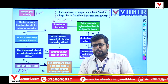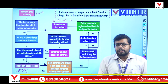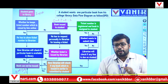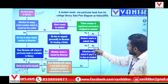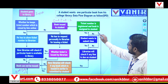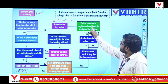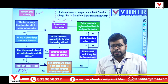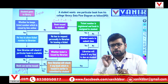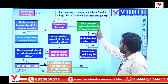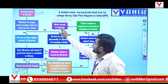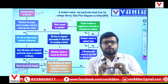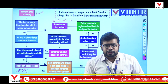If you have returned the previous book — yes — then the librarian will check if any fine is due on the student. If there is no fine, the ticket number is registered and the book is assigned to the student. Then finally the book is issued to the student.